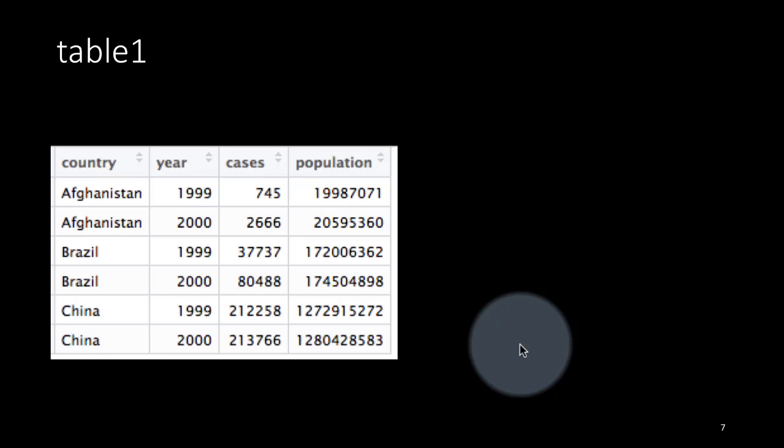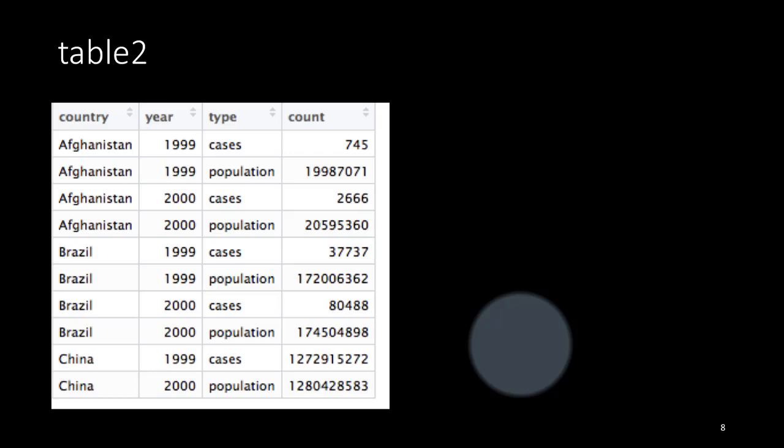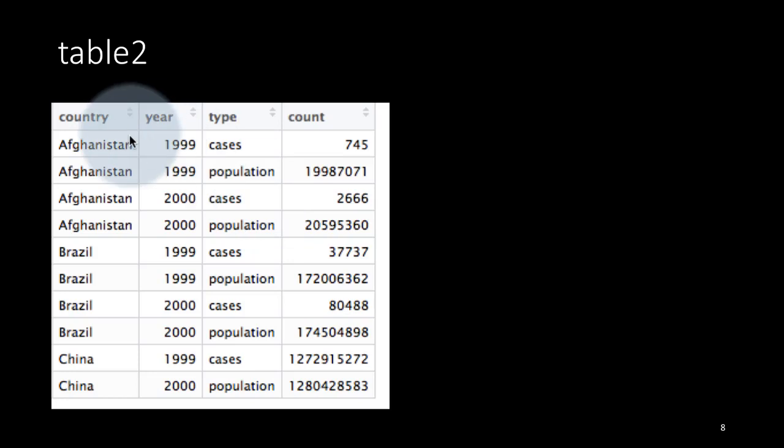Now this is not the only way in which we might find the data. So it is possible that we may find the data looking like this. Instead of the previous set, we might have Afghanistan, 1999, cases, population. So you've got a column called type, which tells you cases, population. In other words, what was on columns earlier, the cases and population were in columns. They are now sitting in the form of rows.